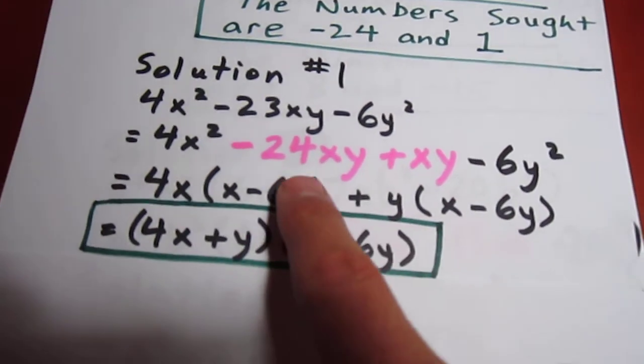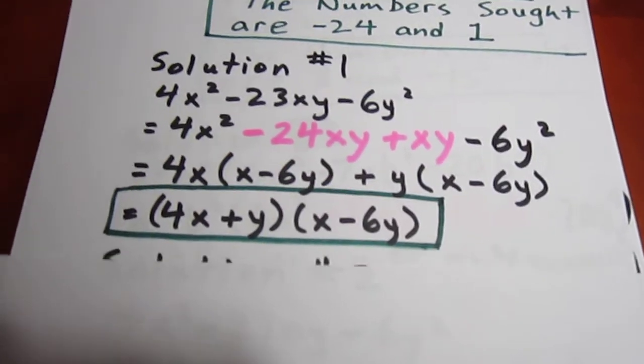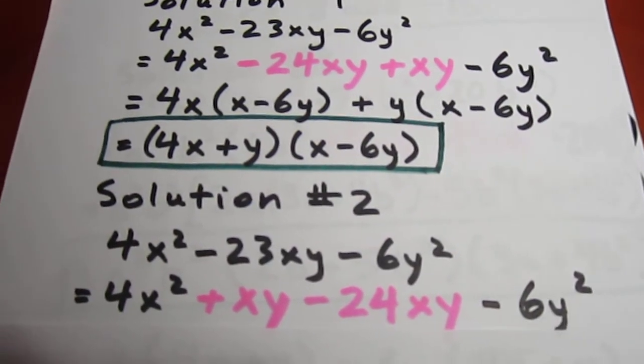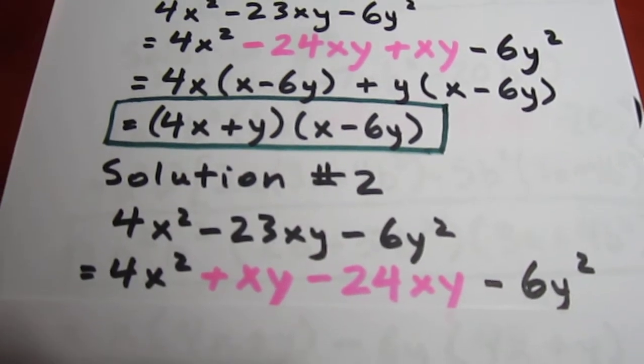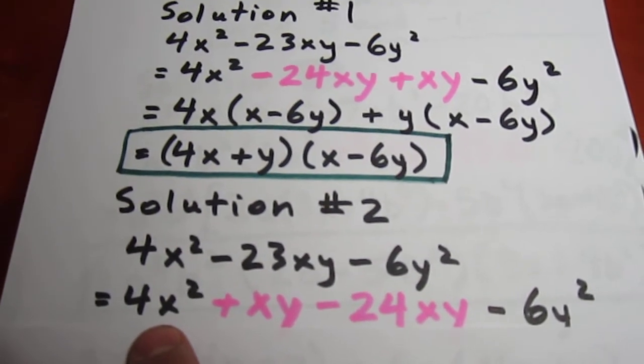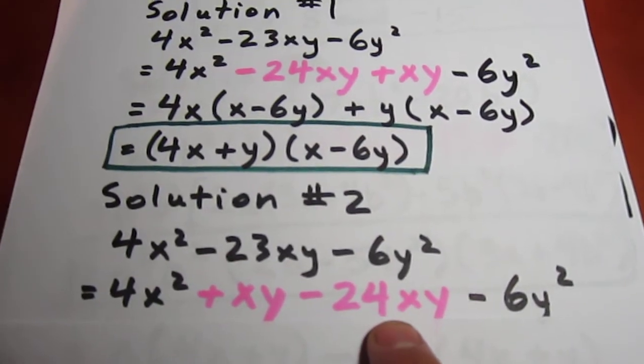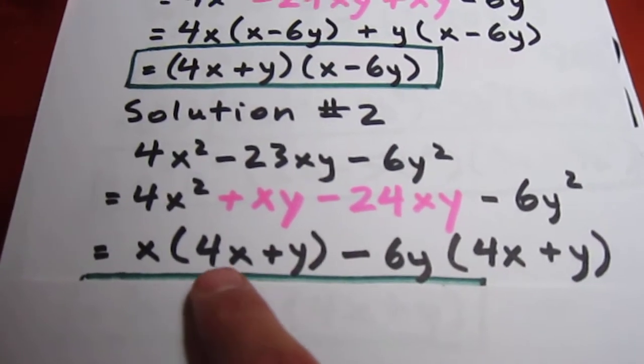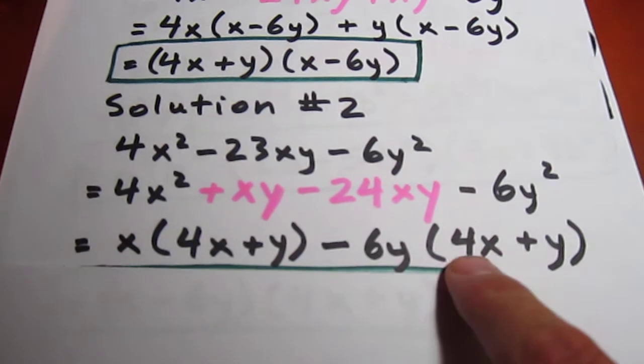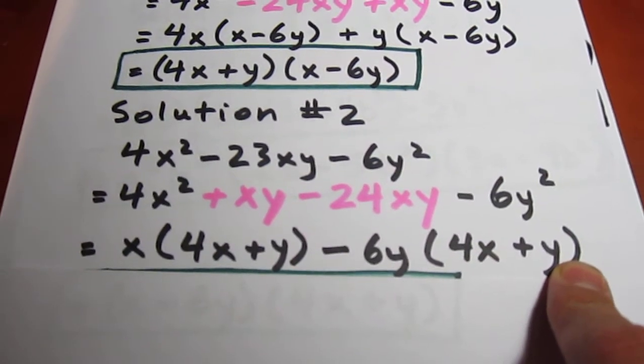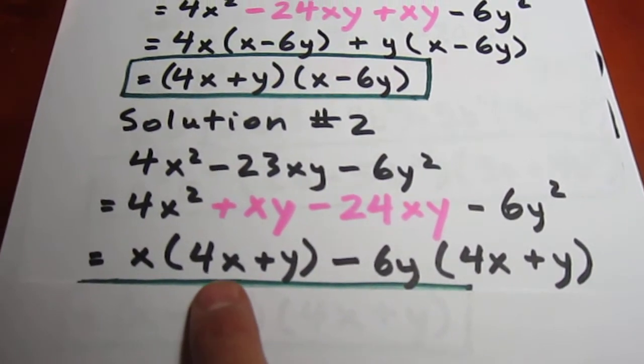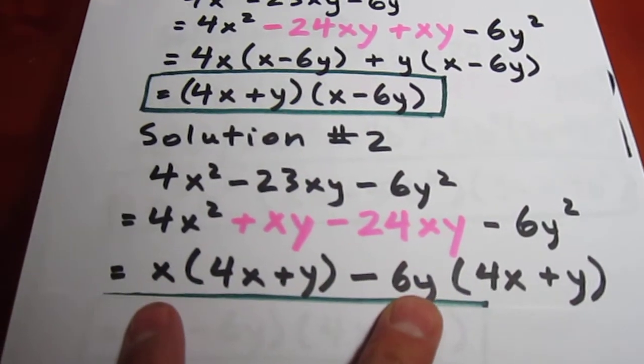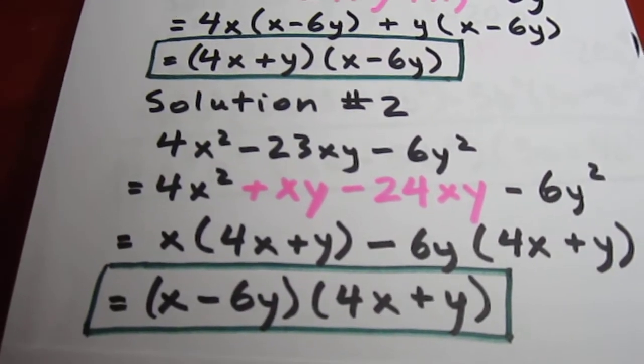You might say, what if I had switched the order of my factors in the middle? No problem. If you had said that -23xy is the same as +xy - 24xy, we could still have factored out x and we could still have factored out -6y. And what that would have left us with was a 4x + y binomial factor and a 4x + y binomial factor. We're getting used to this notion now that this will be one of our binomial factors of our final answer and this will be the other one. x - 6y times 4x + y.